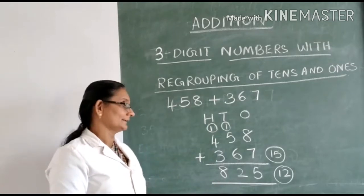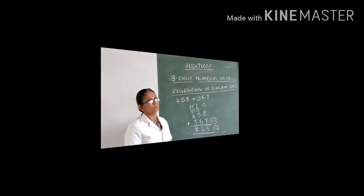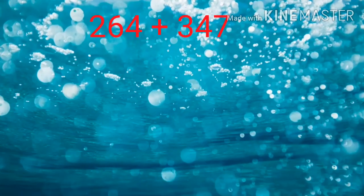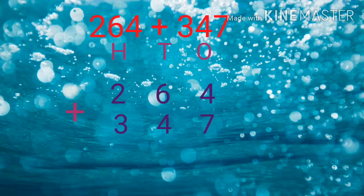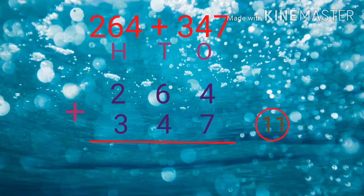This is how we add 3-digit numbers with regrouping in 1's and 10's space. Now let us add the number 264 and 347. We will add the digits in the 1's space. The digits in the 1's space are 4 and 7. Keep the bigger number 7 in mind and 4 in hand. 7 plus 4 will give you 11. Now regroup the number 11 into 10's and 1's — there is 1 ten and 1 one. Write 1 in the 1's place and the other 1 is carried to the 10's place.